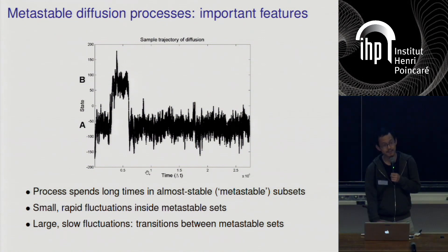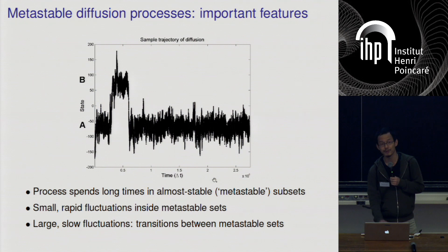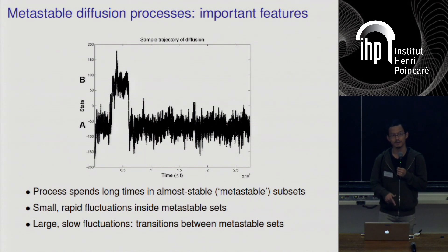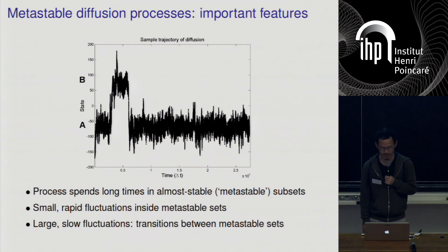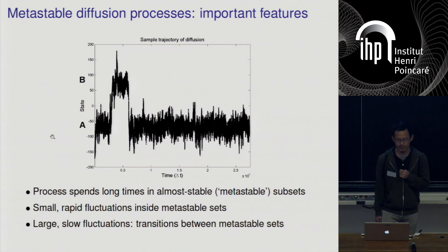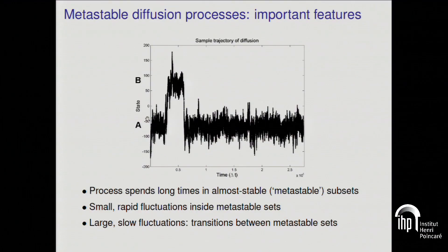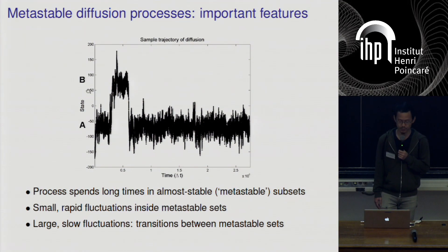On the x-axis, you have discrete time measured in units of delta T, going from 1 to about 300,000 time steps. On the y-axis, you have the state. This dynamical system lives on the circle as represented by minus 180 degrees to 180 degrees. Some important features are that we have small or rapid fluctuations inside the metastable set — within this band which I denote by A, about from minus 120 to minus 30 degrees. That's one metastable set, and there's another from about 40 to 120.